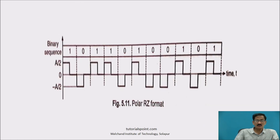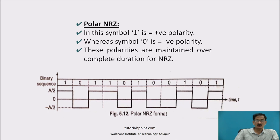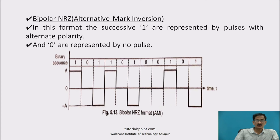For polar return-to-zero, 1 is represented by p(T) and 0 is represented by -p(T), and every pulse returns to zero with a half-width pulse. For polar non-return-to-zero, 1 is represented by +A/2 and 0 by -A/2. For bipolar non-return-to-zero, 1 is represented alternately by a positive pulse p(T) and a negative pulse, with 0 represented by no pulse. Consecutive 1s are denoted by alternating positive and negative pulses.